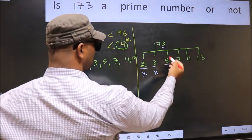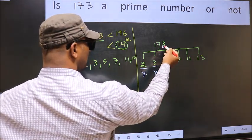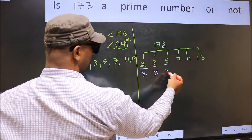Next, number 5. Last digit is neither 0 nor 5. So, this is not divisible by 5.